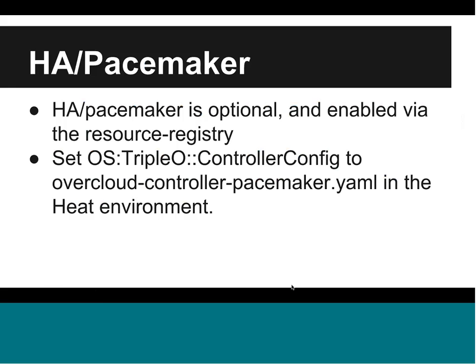We've continued to work on deploying a full HA cloud, and we're also using Pacemaker for cluster management. HA is actually always deployed with all the templates we use, but the Pacemaker part is optional. This is enabled via the resource registry feature, and it's just a one-line change in the Heat environment file you're using to deploy. That shows how powerful that feature is — we can toggle these different recommended deployment scenarios with simple changes in the Heat environment.